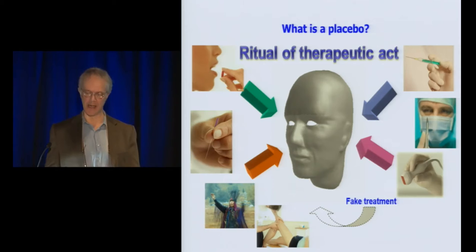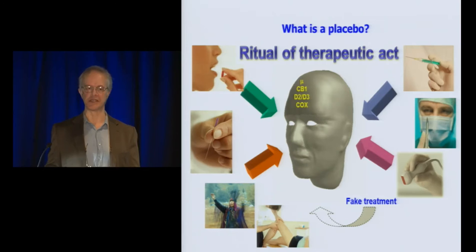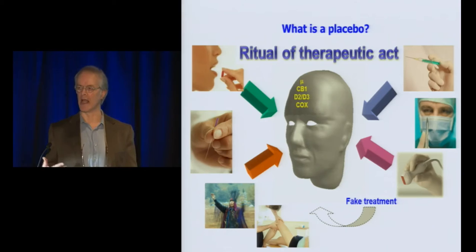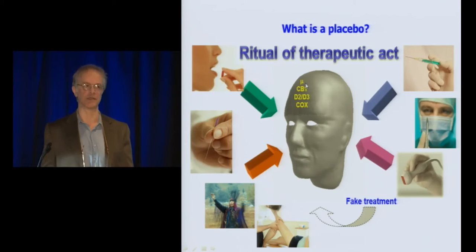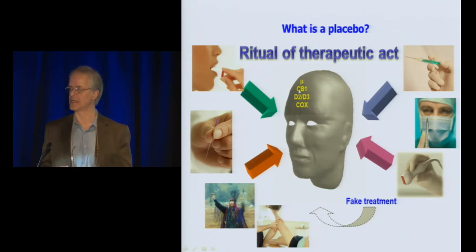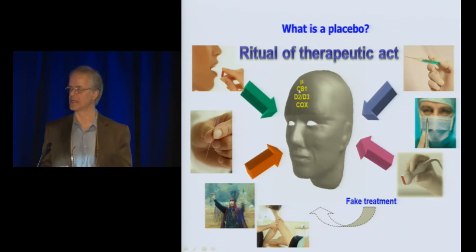What I would like to show you today, and convince you of, is that all these sensory and social stimuli modulate in the brain of patients the very same biochemical pathways which are modulated by the drugs we give in routine medical practice. For example, when we give a painkiller like morphine, morphine binds to the mu-opioid receptors. But expectations about receiving morphine modulate the very same mu-opioid receptors. And this is true for other biochemical pathways as well. I would like to give two or three examples about these common mechanisms between drugs and placebo.